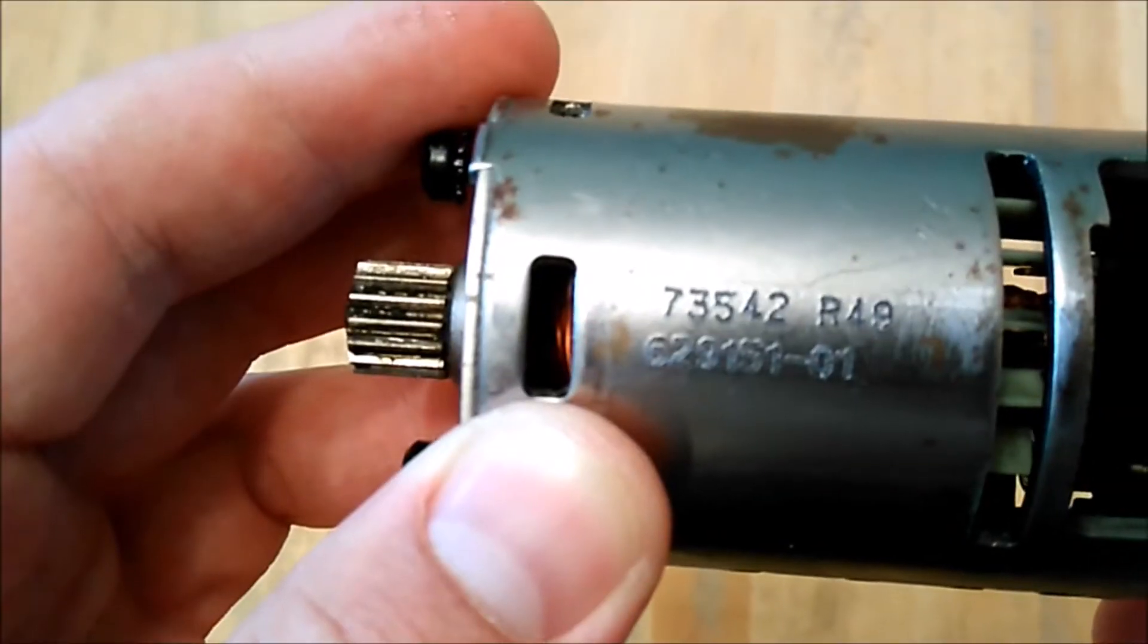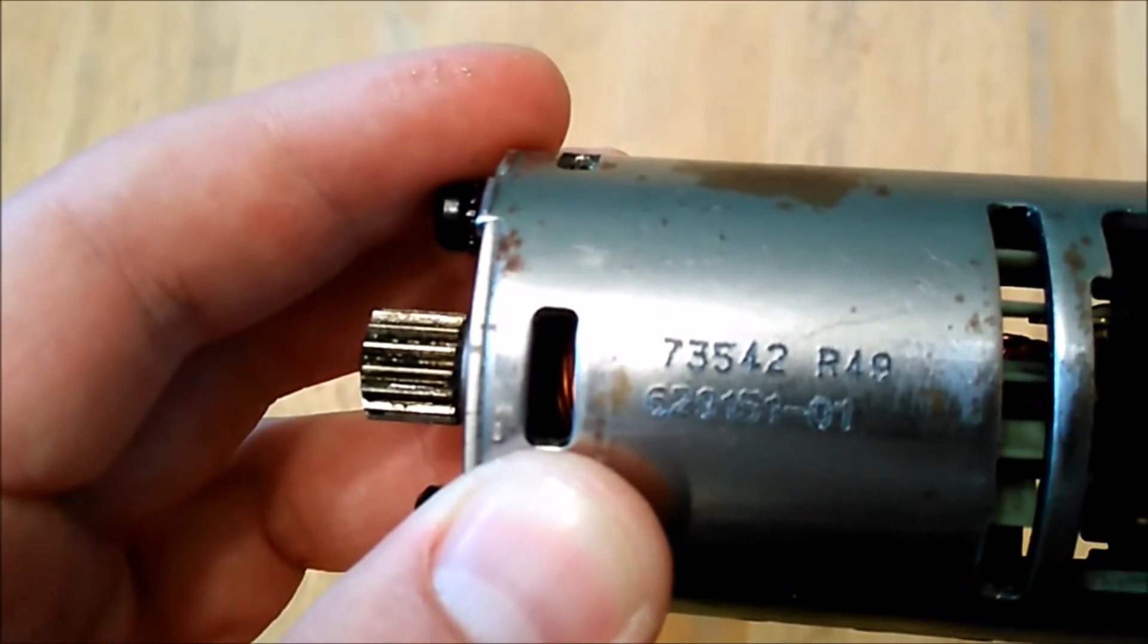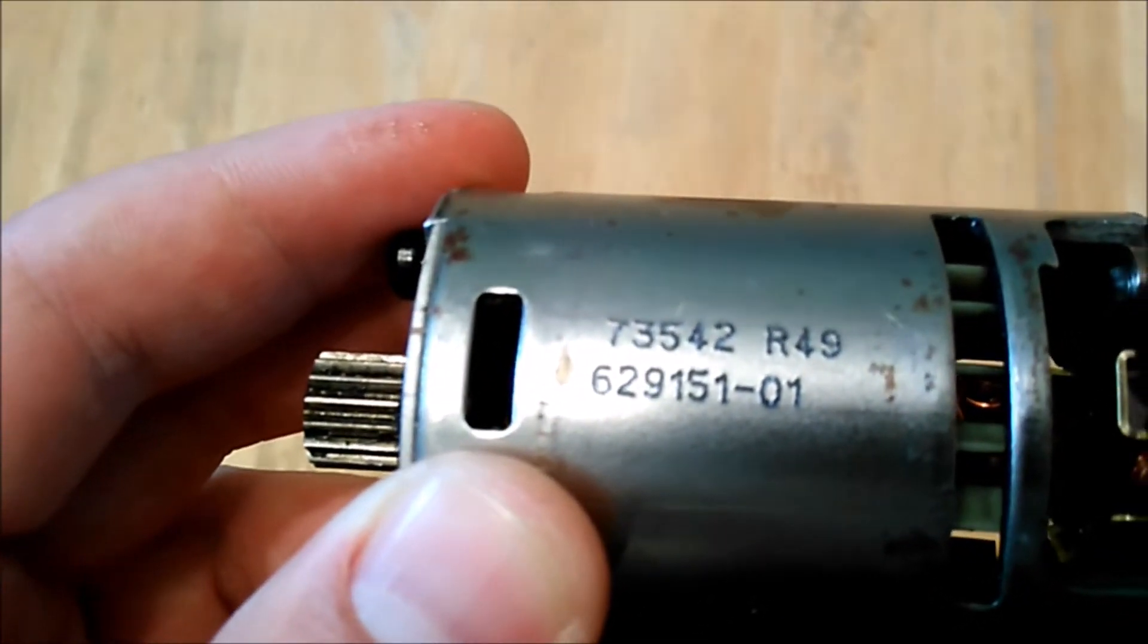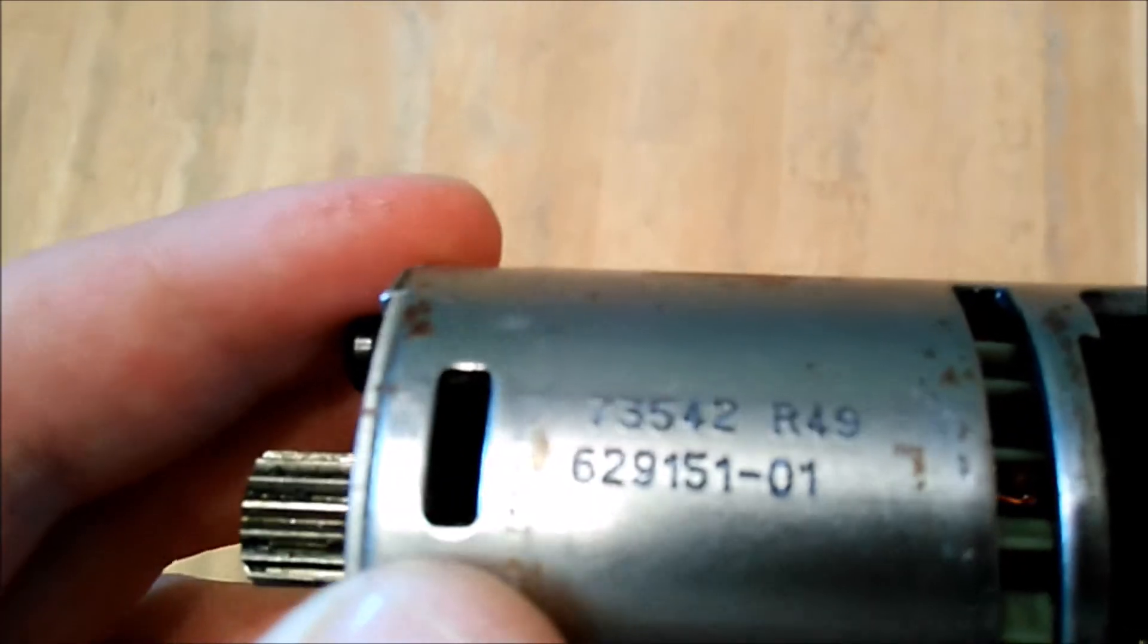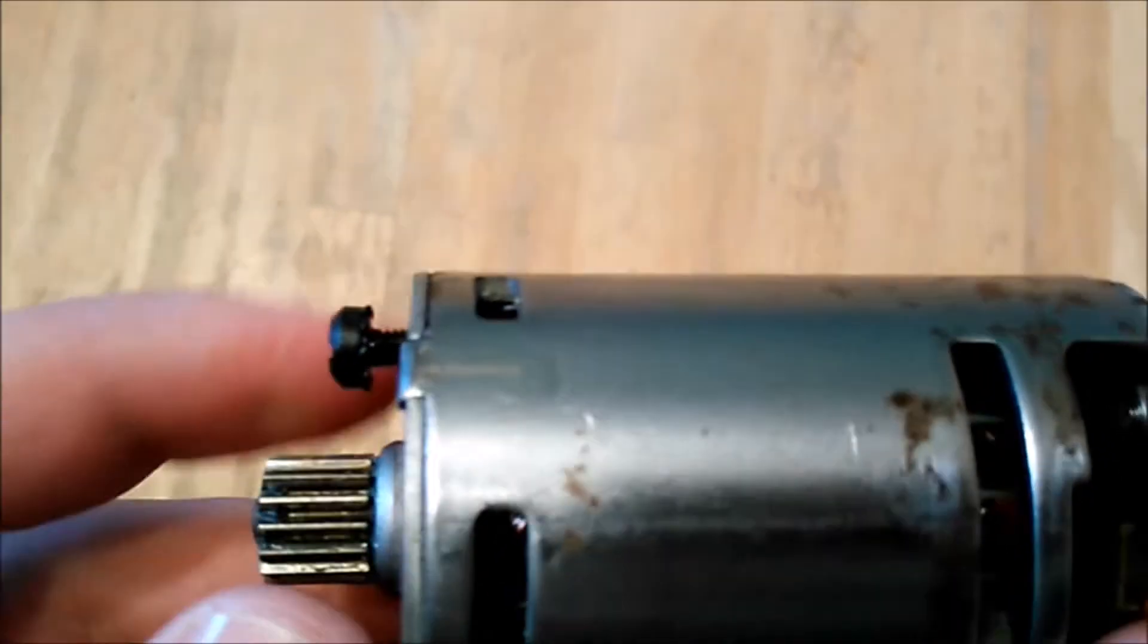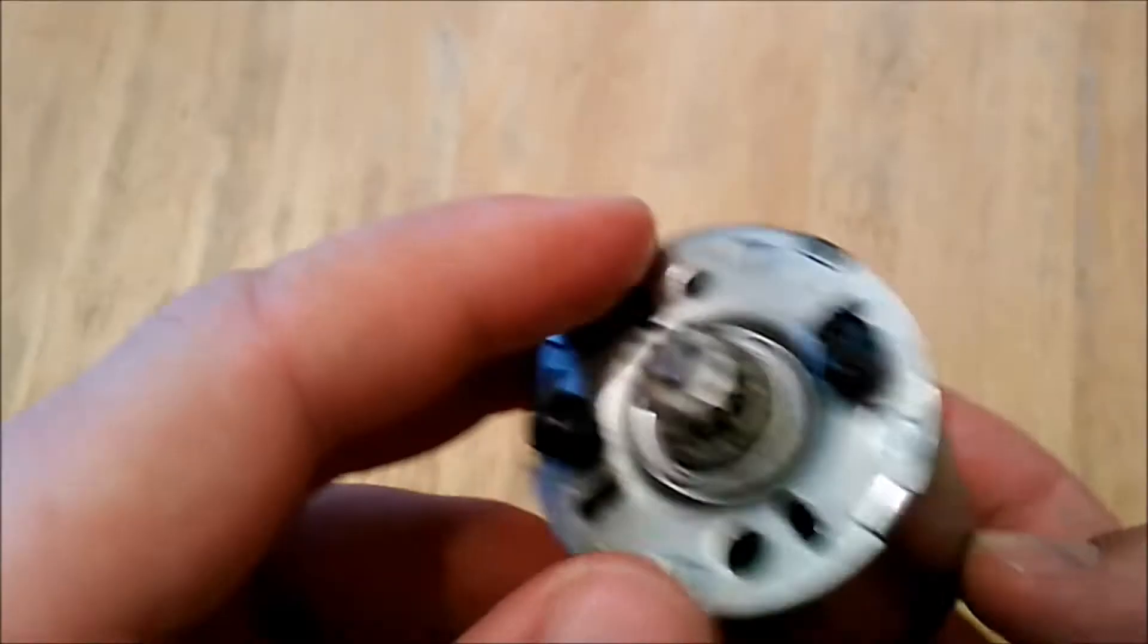All right guys, this is the DeWalt 73542 R49629151-01 motor. From here on out I'm just going to call it the DeWalt 820 because that's what it's commonly referred to as.